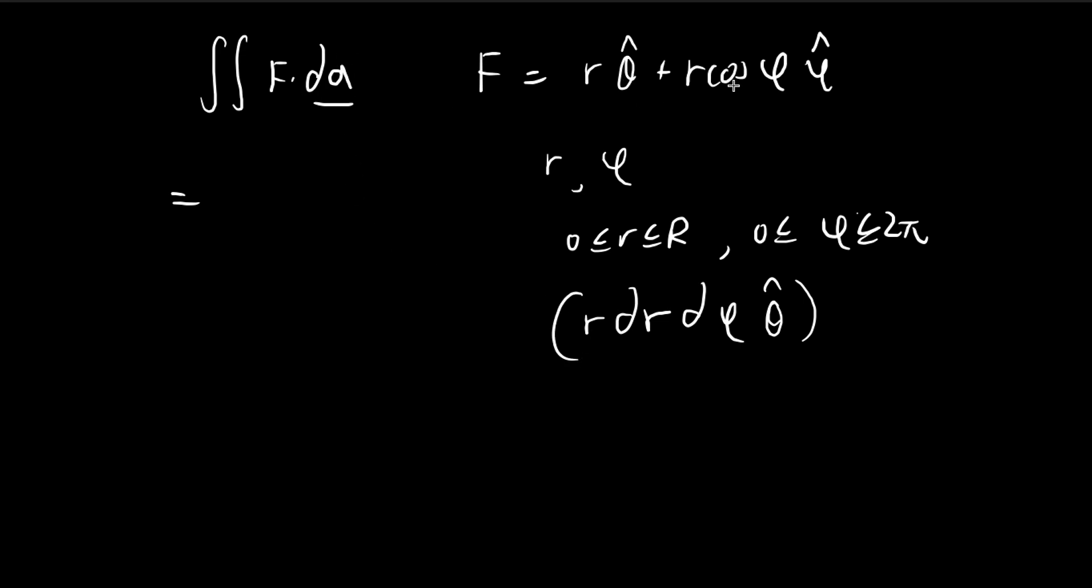So once we do the dot product, you see that this term goes away, and then we're only going to be left with, there is an r, so we're going to be left with r squared dr d phi. And the theta hat, they're going to dot together, and they're just going to be equal to 1. So this is what this surface integral is going to turn it to. So you specify the bounds of the variables.